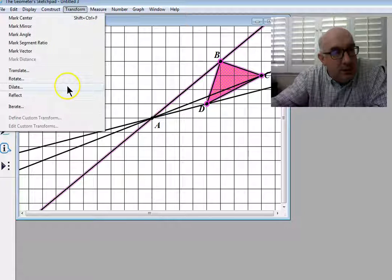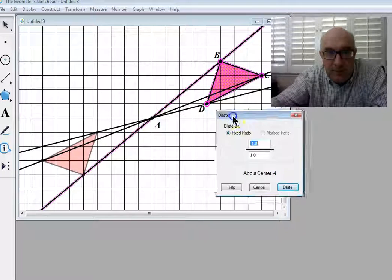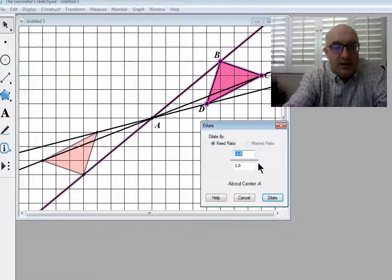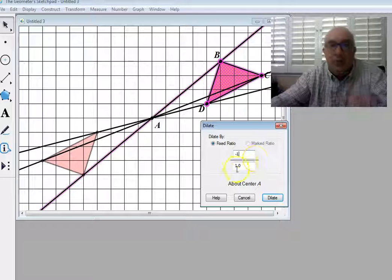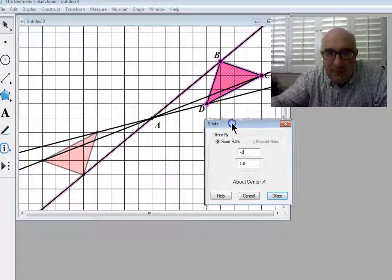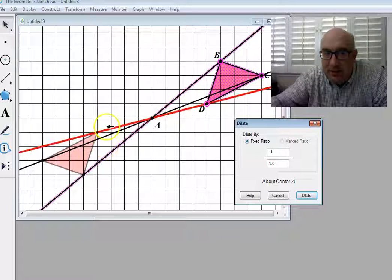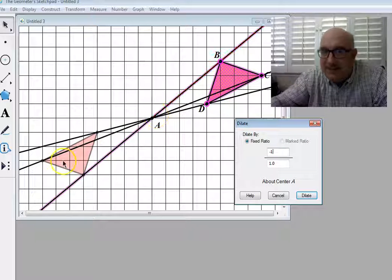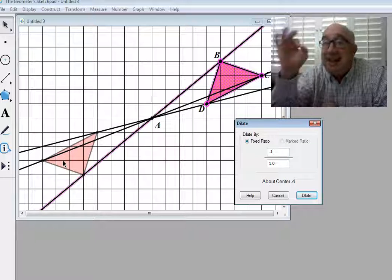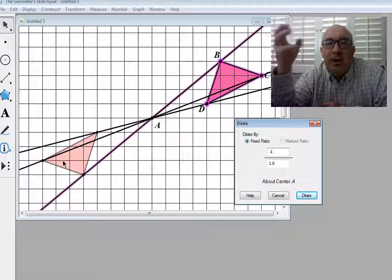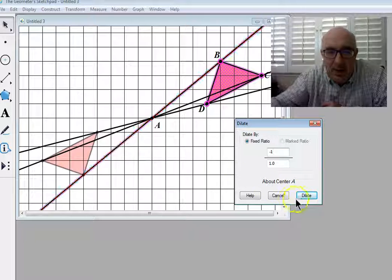And I'm going to dilate this by a scale factor of negative 1. Actually, I'm going to just leave this up here. See, here it is. It's dilated. It's the same exact size because it's a negative 1 dilation, and so it stays right where it's at.